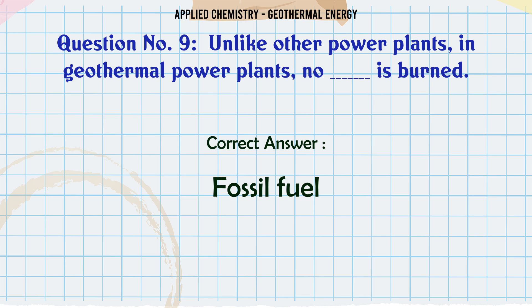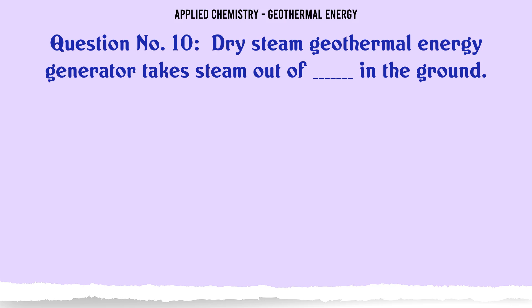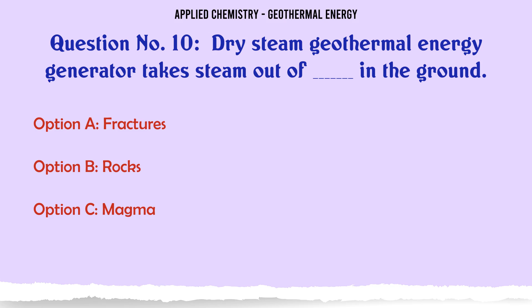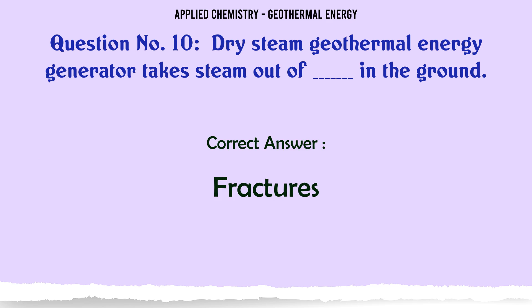Dry steam geothermal energy generators take steam out of what in the ground? A: Fractures, B: Rocks, C: Magma, D: Water. The correct answer is fractures.